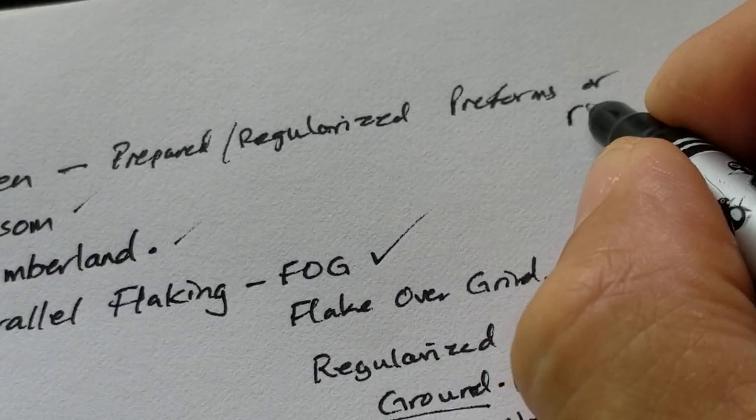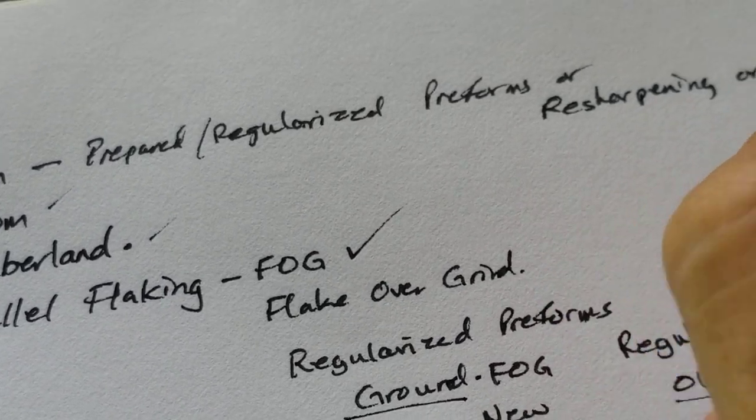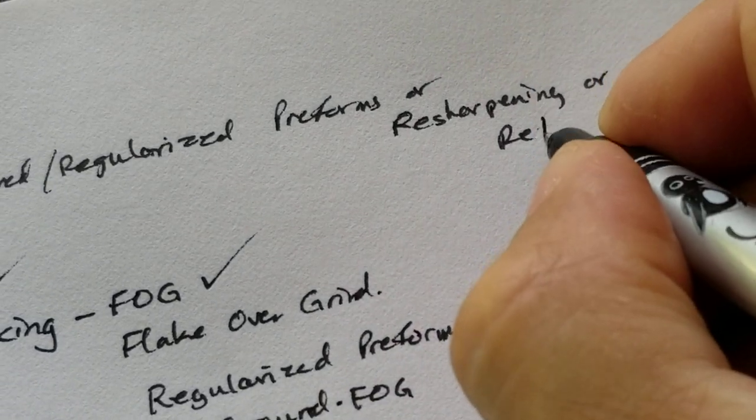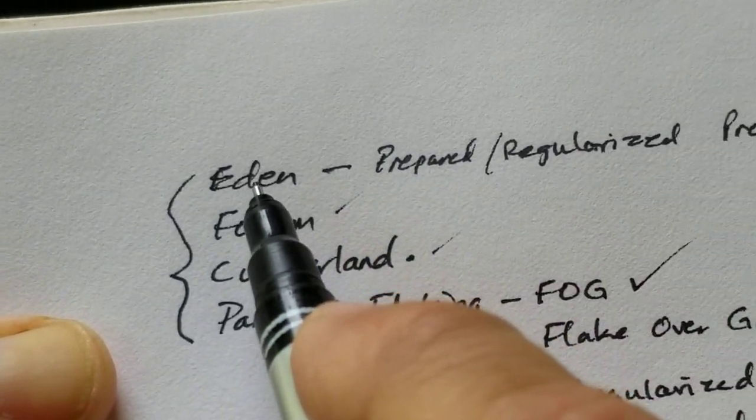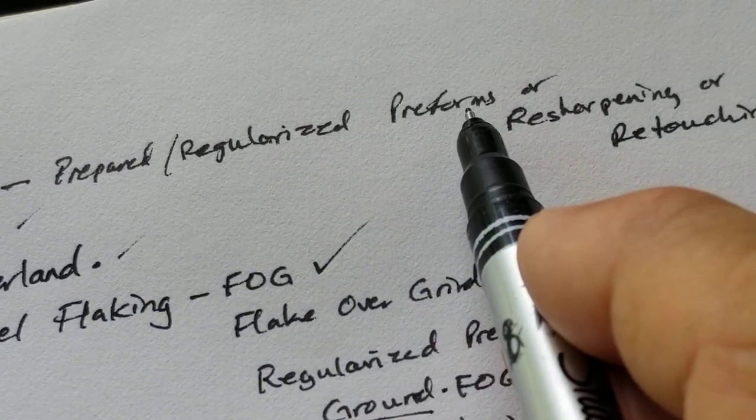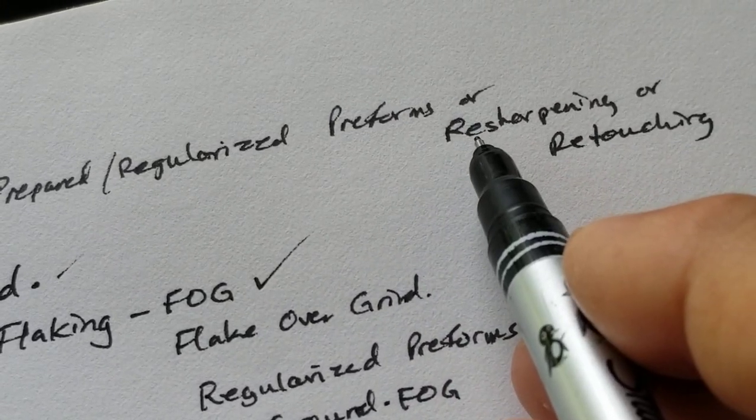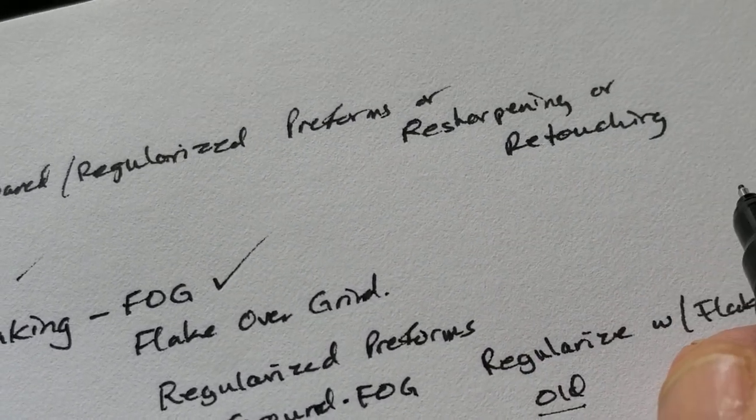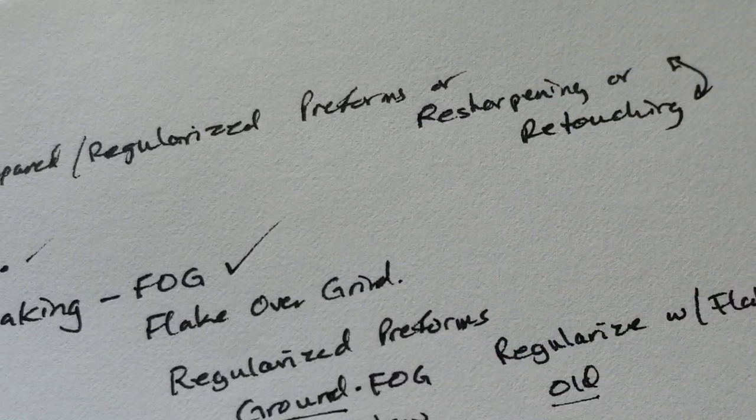Or resharpening, or retouching. The Edens were done in three ways: regularized preforms, or resharpening that regularized the surface, or retouching that regularized the surface. What's the difference between retouching and resharpening?